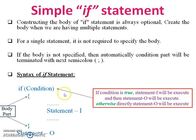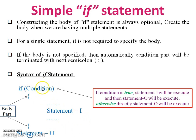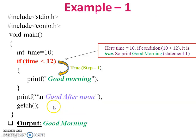Here is the syntax of the if statement. A condition is given inside the if brackets. If the condition is true, Statement A will be executed, and then Statement B will be executed. If the condition is false, execution jumps directly to Statement B — Statement A will not be executed.